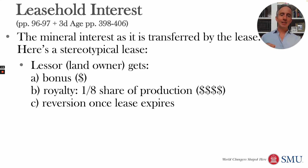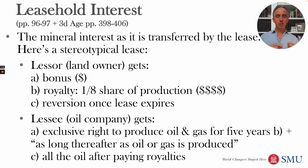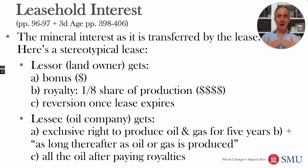That lease isn't necessarily going to last forever. The typical lease lasts for an initial primary term of years during which the oil and gas company can look for oil and gas. But if they start producing, it will last as long as oil and gas is produced. When production stops, the lease ends and the landowner receives the reversion back.